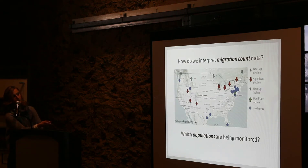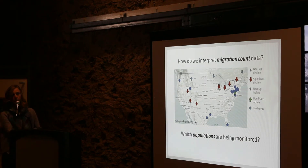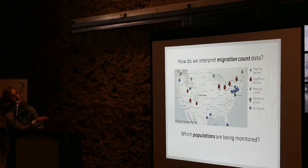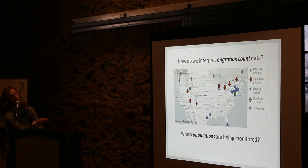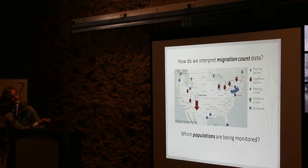So how do we interpret migration count data if we don't know which populations are being monitored, and we know that kestrels are changing their migratory strategy? If we have the ability to understand where individuals at a given watch site are coming from, we could determine whether a decline is due to shifts in migration movement or whether those individuals are experiencing severe decline. At any given watch site, we want to be able to know which individuals we're monitoring.